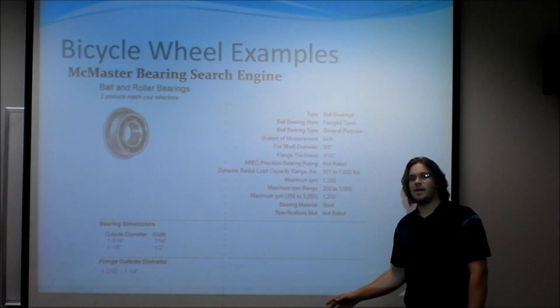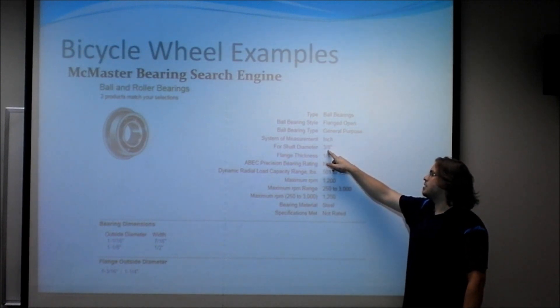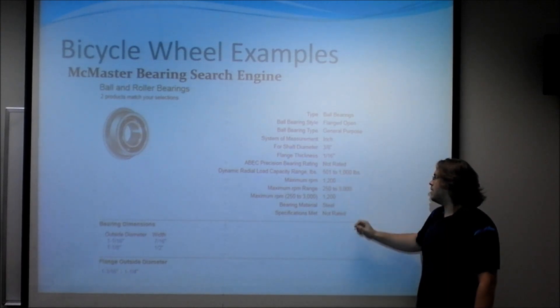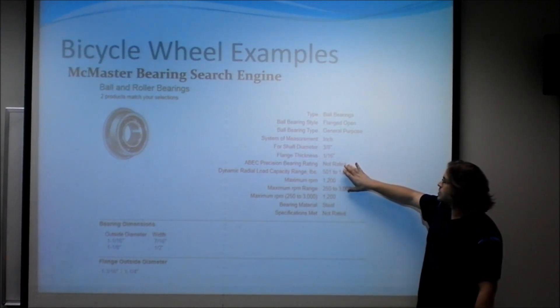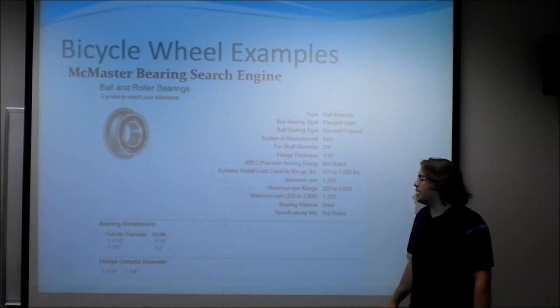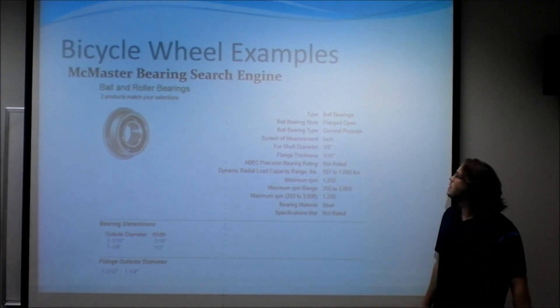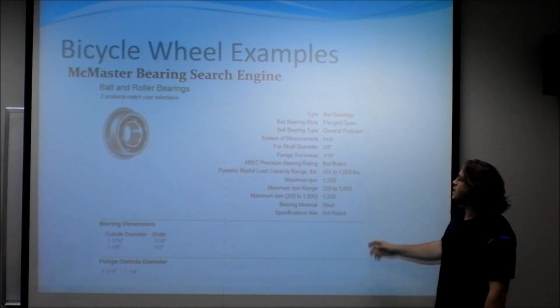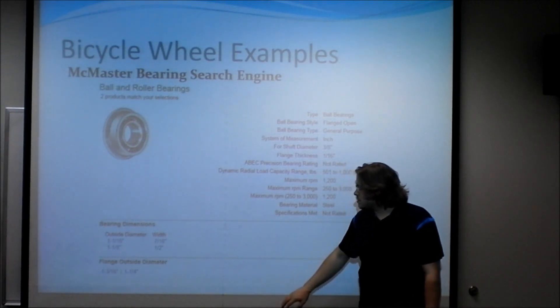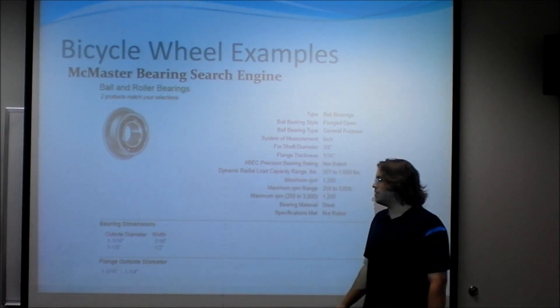We use these values and put it into the McMaster bearing search engine. And the first thing we put is a 3-inch diameter shaft. Once that was put in, we already had a limiting range of weight, speed. And once we had those three, we really couldn't narrow it down more. So all we really had left to do was choose the flange thickness, the outer diameter of the bearing, the flange diameter, and the width. Using these, we were able to get a flange diameter of 1 sixth of an inch. And we have four products or six different selections left over. Out of the diameter, we have two choices. The width, we have two choices. And flange outer diameter, we have two choices.